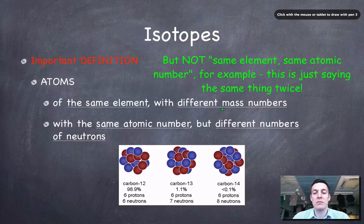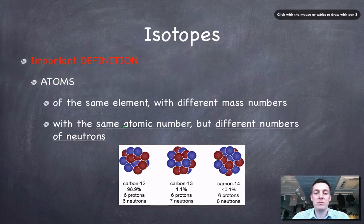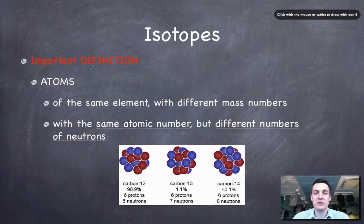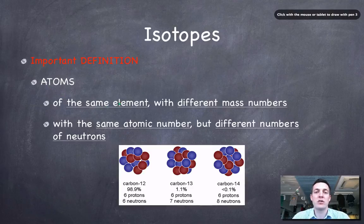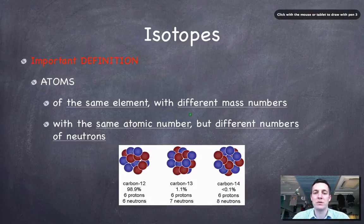So I could have the same element with different mass numbers, same element with different numbers of neutrons, or same atomic number with different mass numbers. What I have to remember to include if I'm doing this in an IB exam is to mention the word 'atoms' at the start. So it's not good enough just to say these isotopes are just the same element with different mass numbers. I have to say that they're atoms of the same element with different mass numbers.